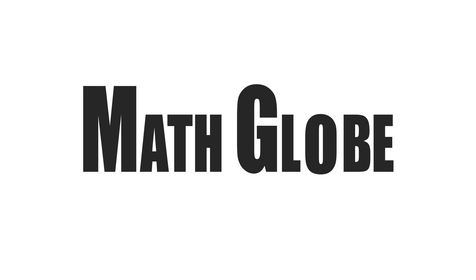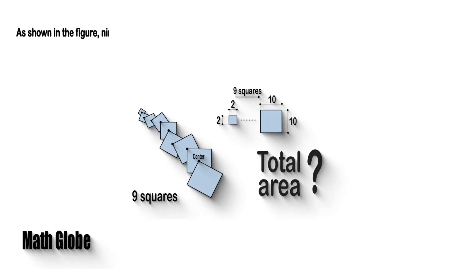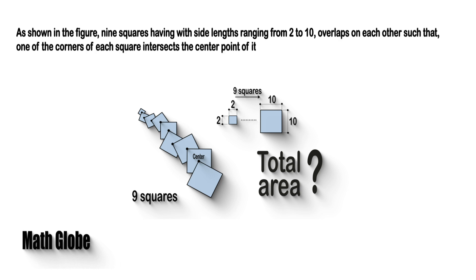Hi, this is MathGlobe. As shown in the figure, 9 squares having side lengths ranging from 2 to 10 overlaps on each other such that one of the corners of each square intersects the center point of its preceding neighbor. So what would be the total area of this shape?